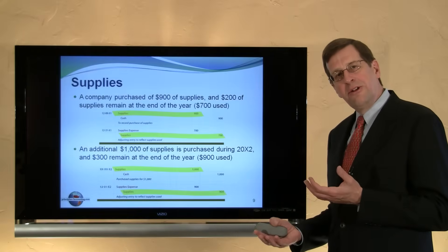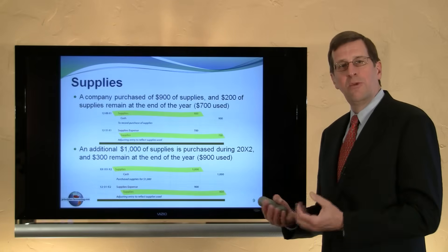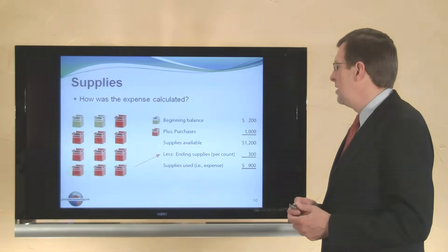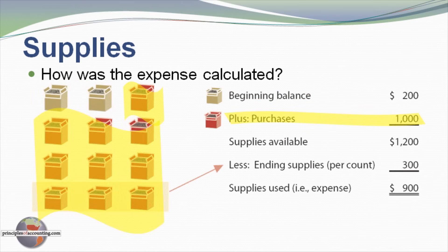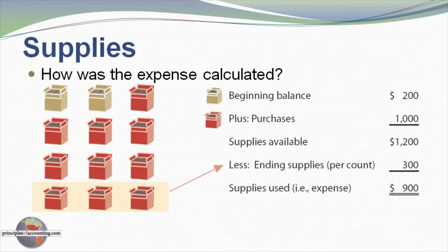Notice supplies went up $1,000 and down $900 during the period, a net increase of $100. Bear in mind, in the prior year there was $200 of supplies on hand, so we started the year with $200 and ended with $300 — a net increase of $100. Our beginning balance is $200 — two boxes full. During the year we buy 10 more boxes or $1,000 worth. Beginning balance $200 plus purchases $1,000 gives us supplies available of $1,200. We take inventory at year end and find $300 of supplies still on hand, telling us that of the $1,200 available, $900 have been used up — hence we know how much to record as supplies expense.